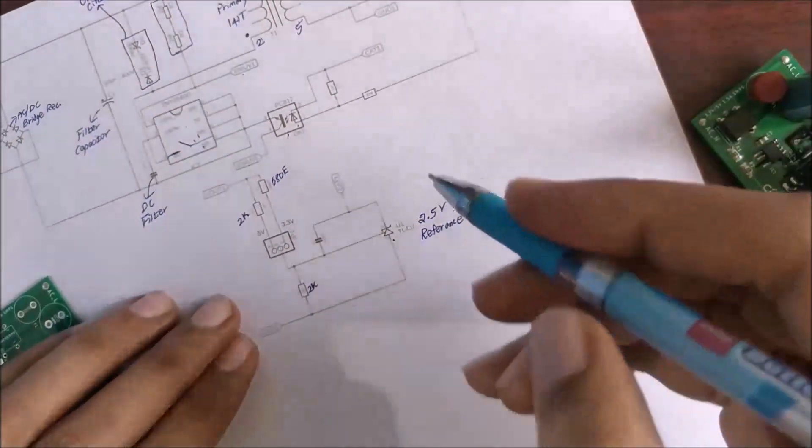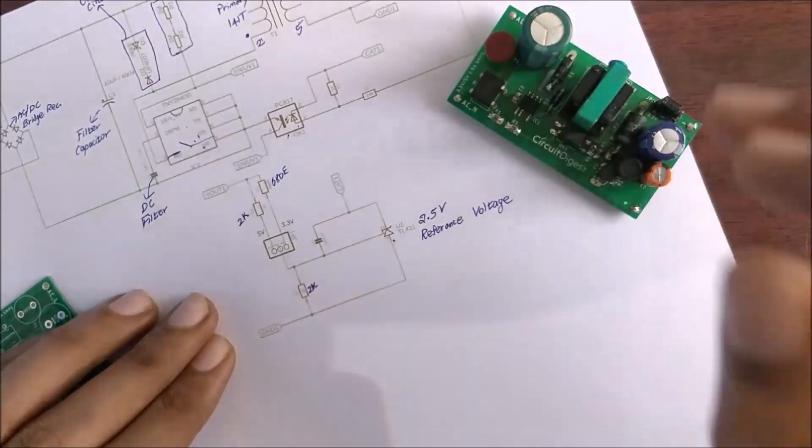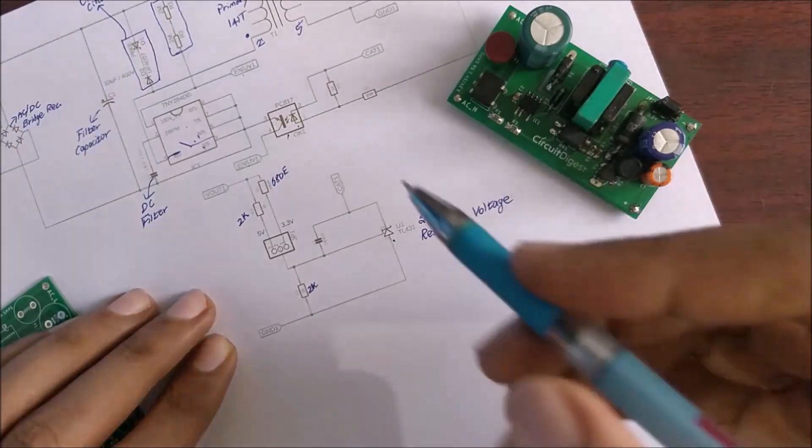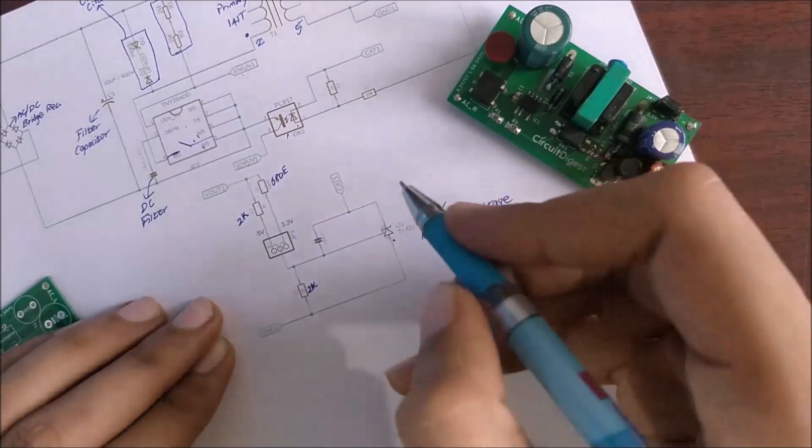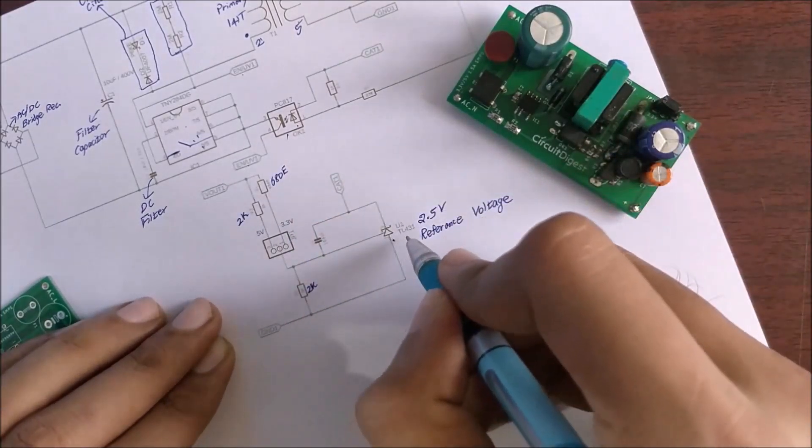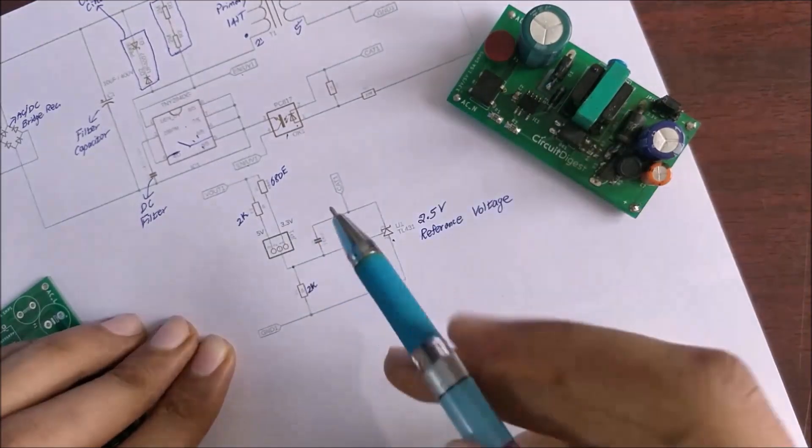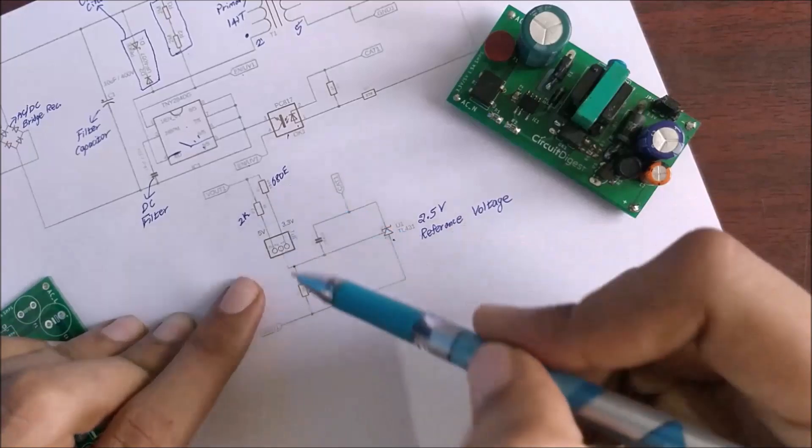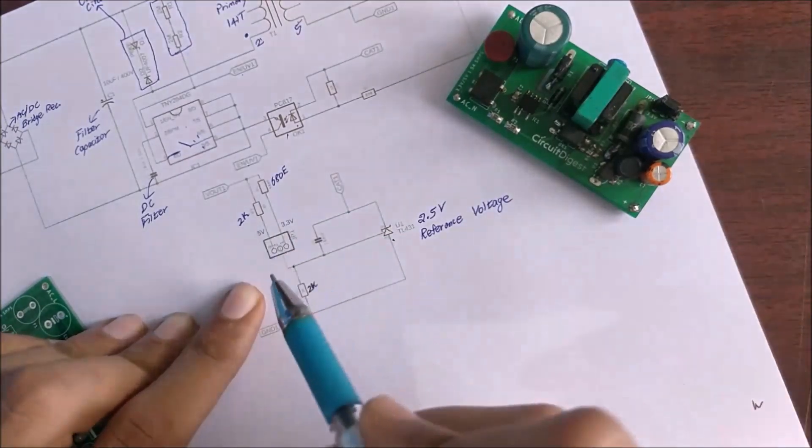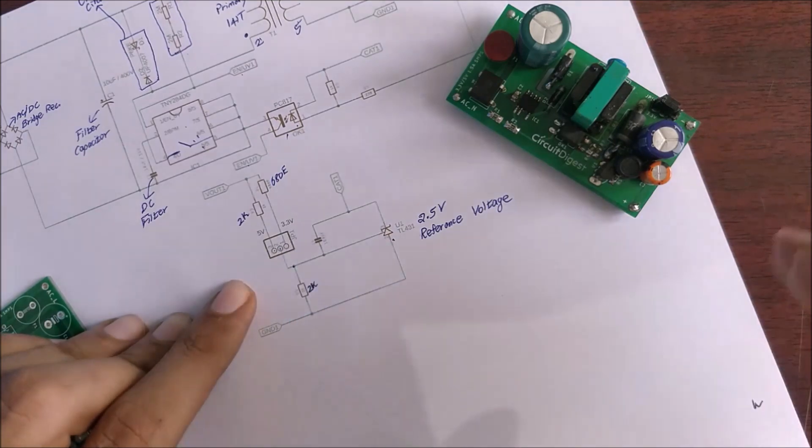Now let's see how to set whether the output voltage should be 5 volts or 3.3 volts. To do that we have a voltage divider network over here. As I told you earlier this TL431 will always provide 2.5 volts at this point. Using this voltage divider network we can either shift the jumper pin between these two connections or these two connections.